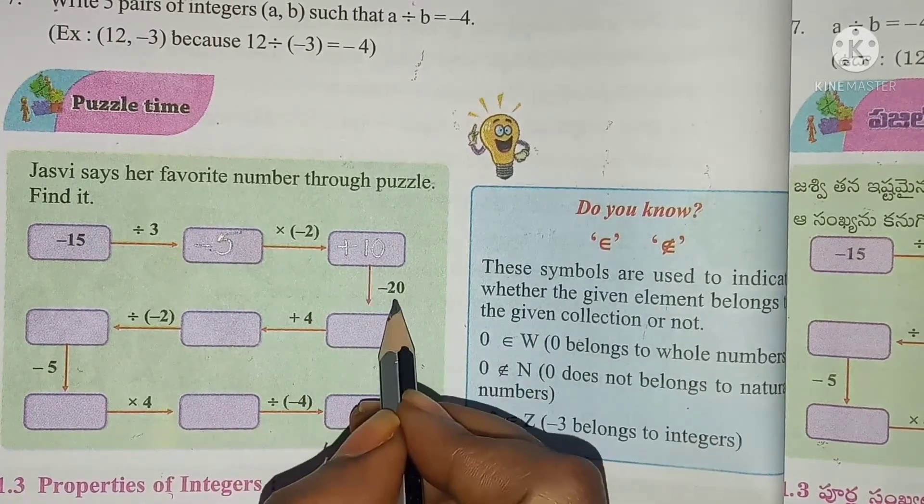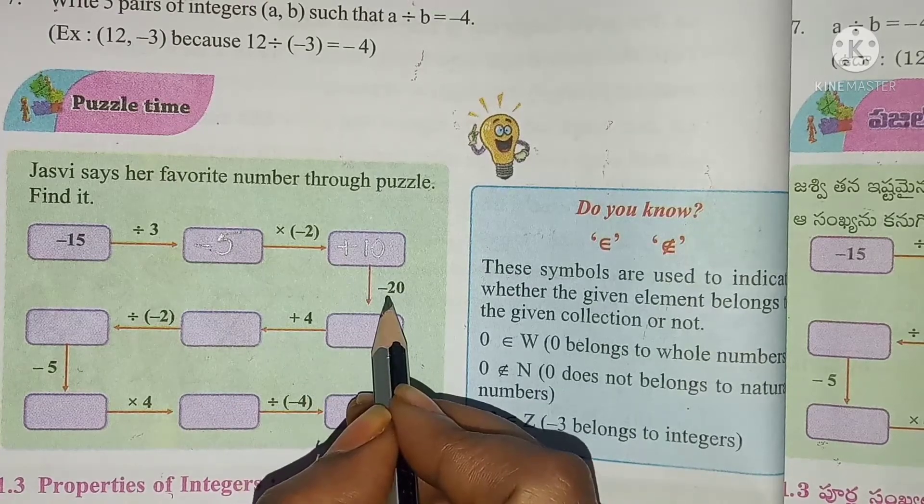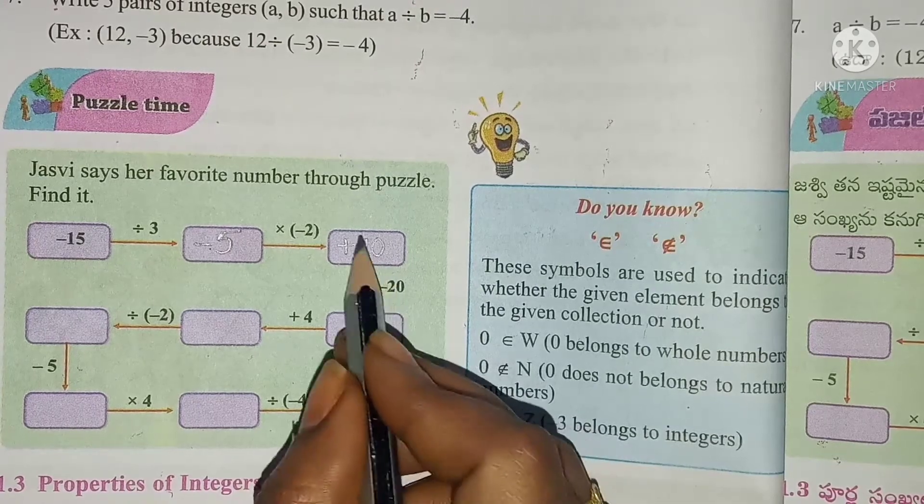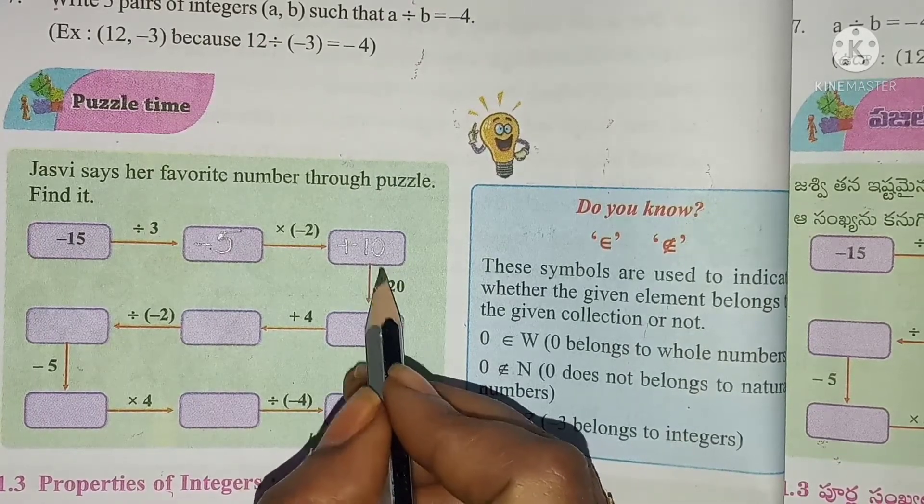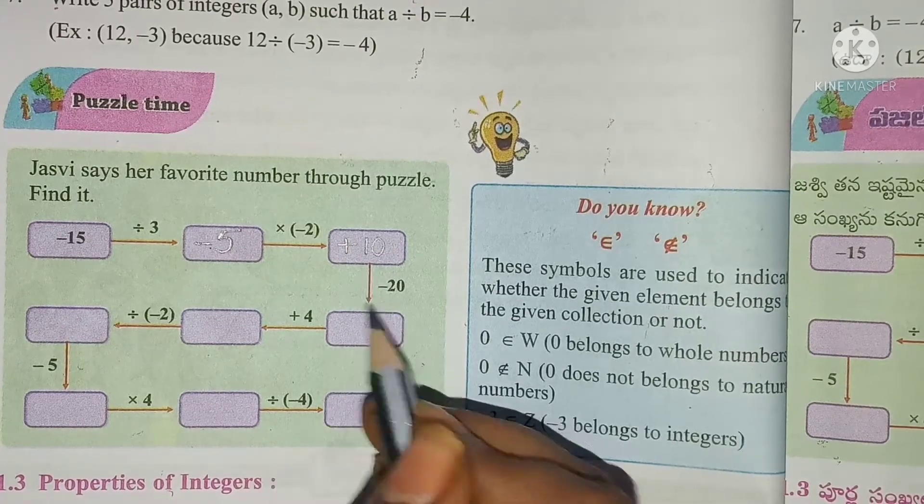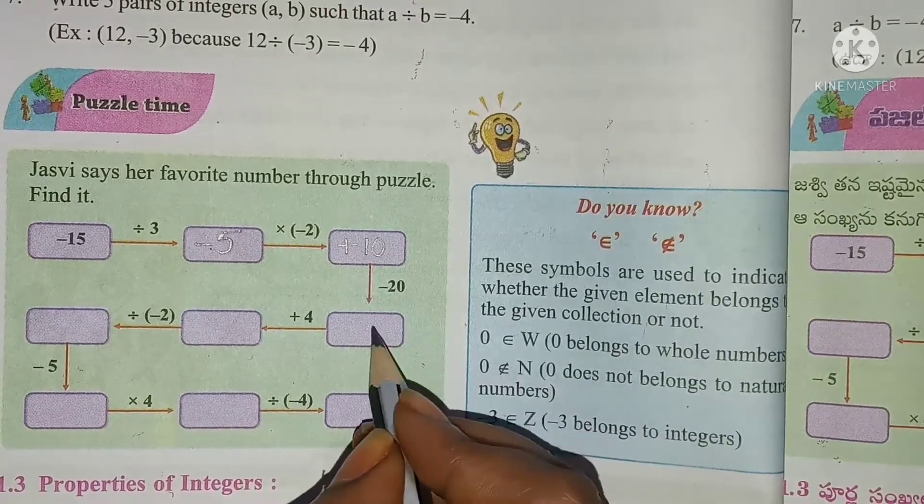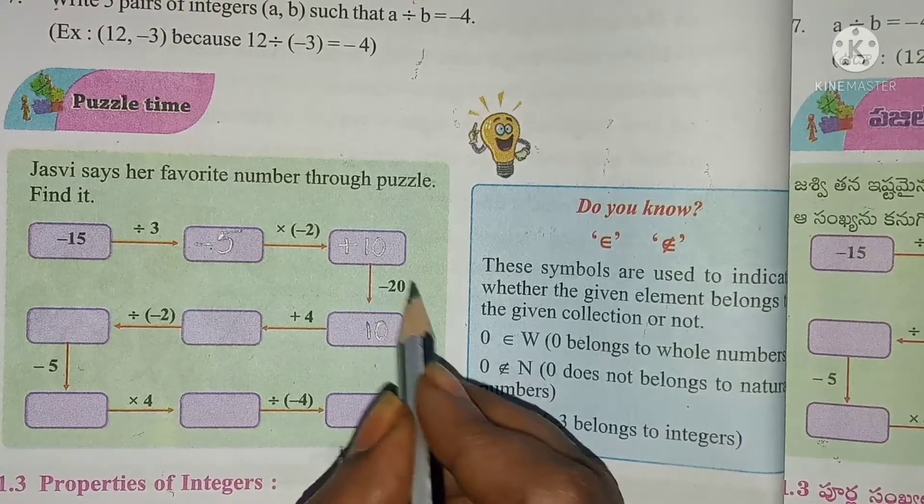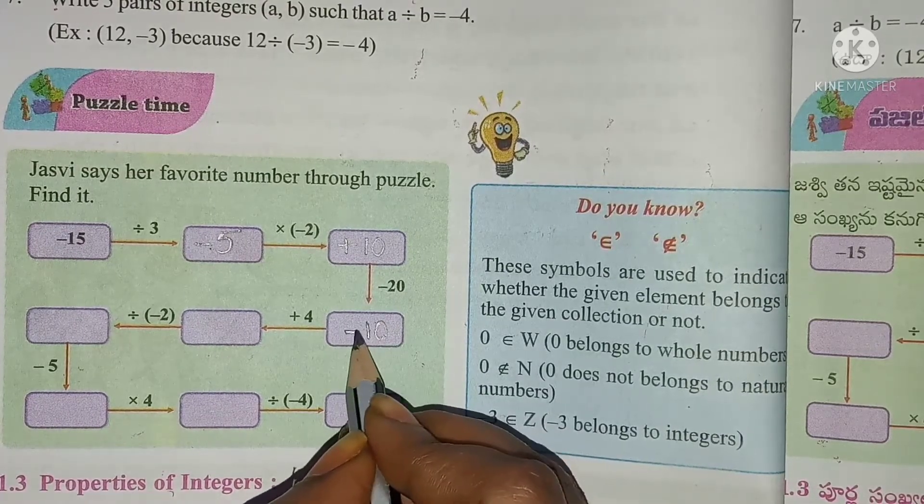10 minus 20. Plus and minus, so what we have to do is subtract both the numbers and keep the highest value sign. Subtract 20 from 10 we get 10, but the highest value is 20, so it is minus 10.